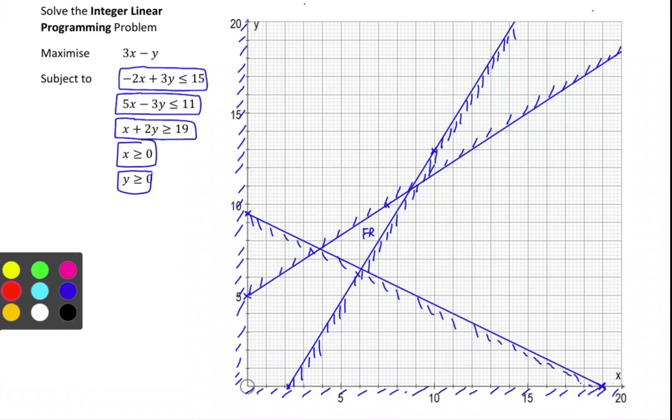Because we are only looking at integer solutions to this, we must only look at integer points within your feasible region. Now the integer points, well there is a point here. And there is a point here. And there is a point there. And there. And there actually.